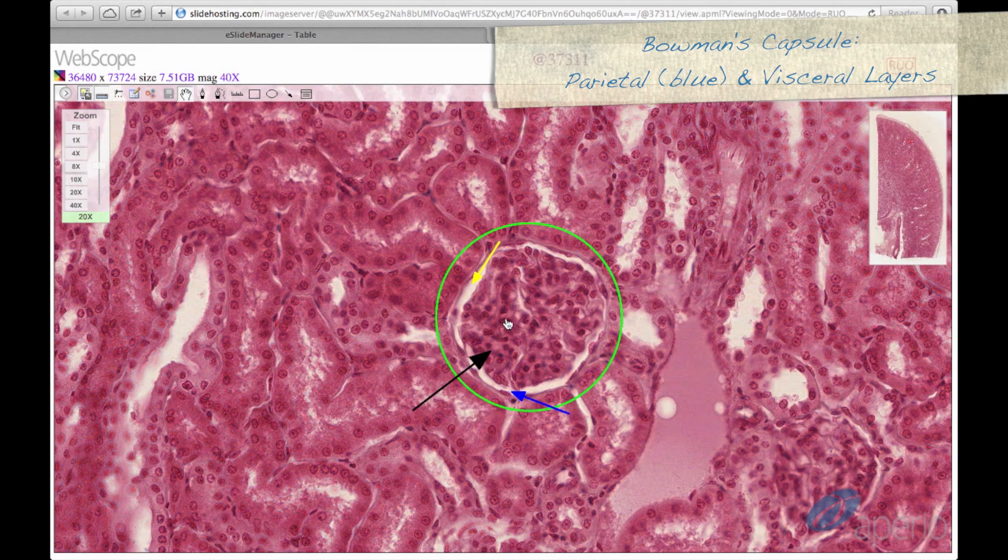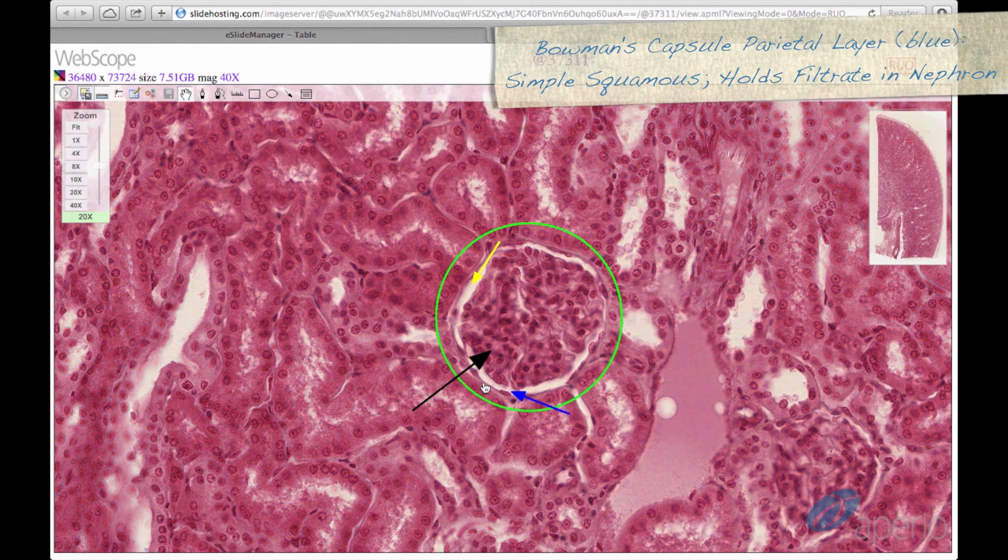Bowman's capsule actually has two layers, a visceral and parietal layer. The parietal layer, seen here at the blue arrow, is composed of simple squamous epithelium and functions to hold the filtrate in the nephron.